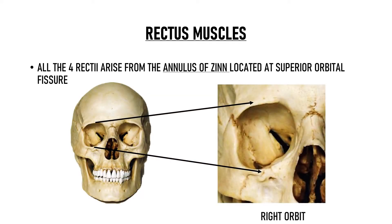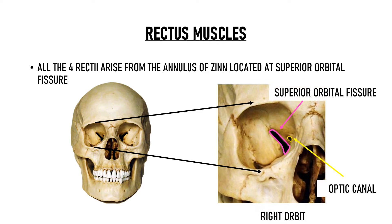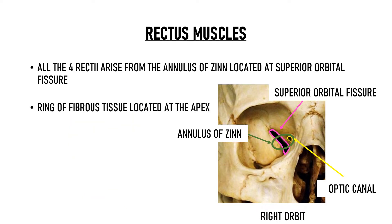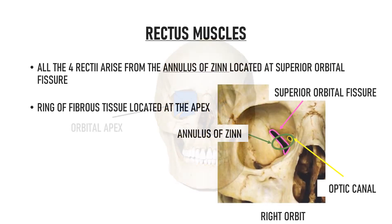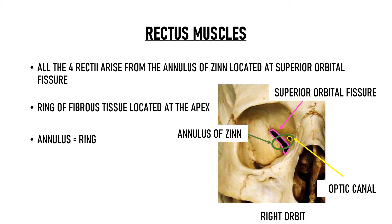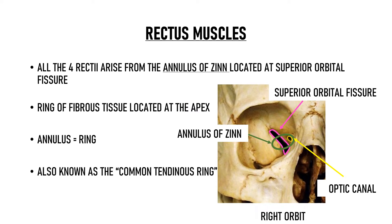The superior orbital fissure is a foramen in the skull that lies between the lesser and greater wings of the sphenoid. Adjacent to it is the optic canal from where the optic nerve enters the orbit, and this is where the annulus of Zinn is located. It is a ring of fibrous tissue at the apex of the orbit — annulus means a ring — and it is also known as the common tendinous ring.